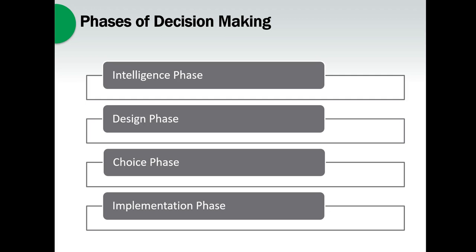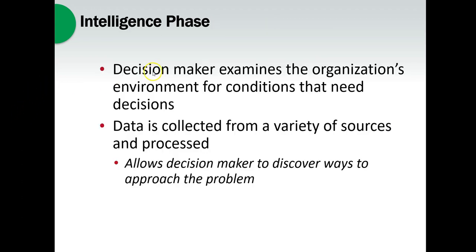I'll use an example of deciding which investment properties - apartment buildings or condominiums - to buy. If someone experienced has already built a model, it can make your life much easier. Decision-makers need to understand their environment and its conditions. For cars, we might look at global unemployment, oil prices, tariffs, metal prices - many different factors. We need to gather intelligence and figure out what data to get and where to get it from.